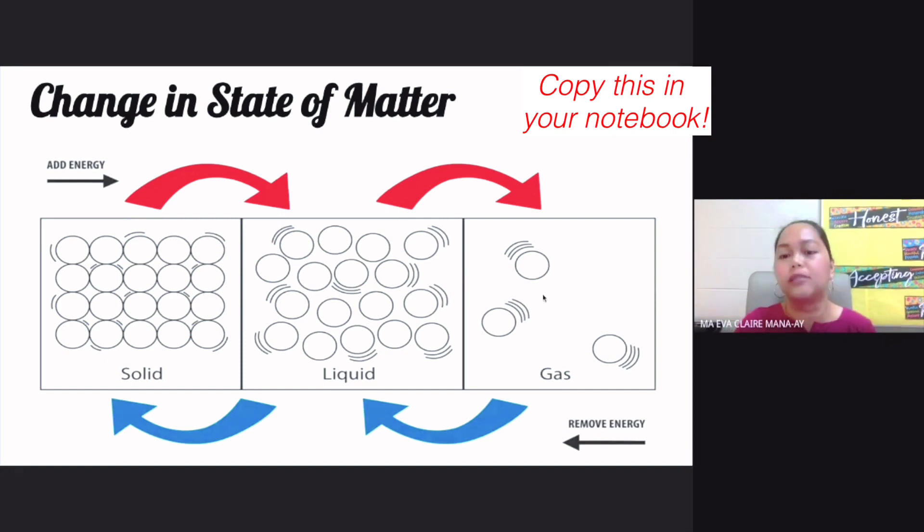Now, as for your gas particles, you see that there's a lot of air spaces between them. There's a lot of air spaces between them. Now, as you can see here, we have red arrows in your pictures. You also have your blue arrows.